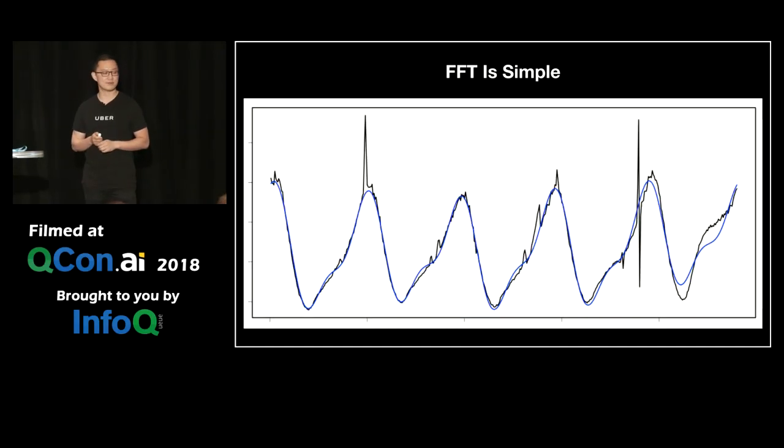Here's the final example. The black curve is the original example. The blue curve is the smooth and the forecast results. You can see they are almost close to each other, as long as the original data has certain periodicity.